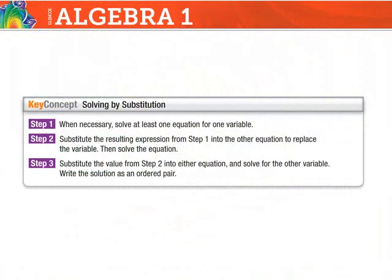To solve by substitution, we have three main steps. Step one: solve at least one equation for one variable — I need y equal to something, or x equal to something. Then in step two, I take that value of x or y from step one and substitute it into the second equation and solve for that variable.